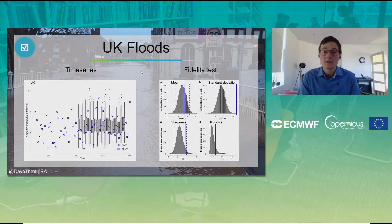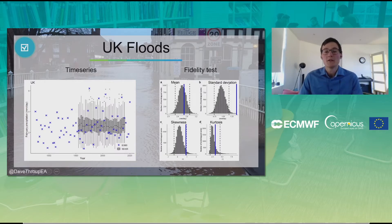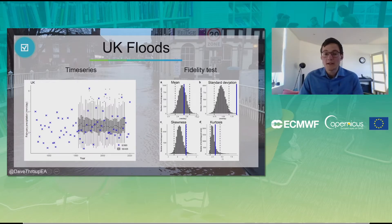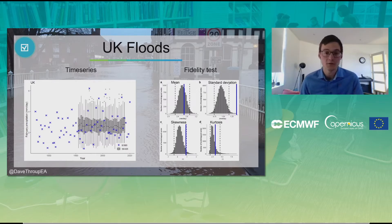On the right is a fidelity test — an important evaluation test highlighted throughout the presentation. Here we test the consistency of the model to the observations, for example for the mean, standard deviation, skewness, and kurtosis. The model is the gray histogram, and the stippled lines must be capturing the blue line — the observations. In this case, we see that the mean is fine, but the standard deviation is too low for the model.